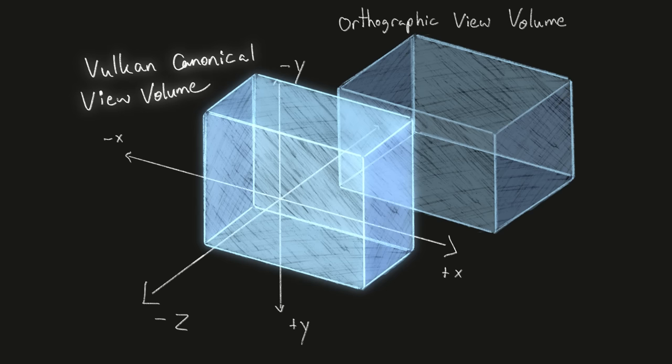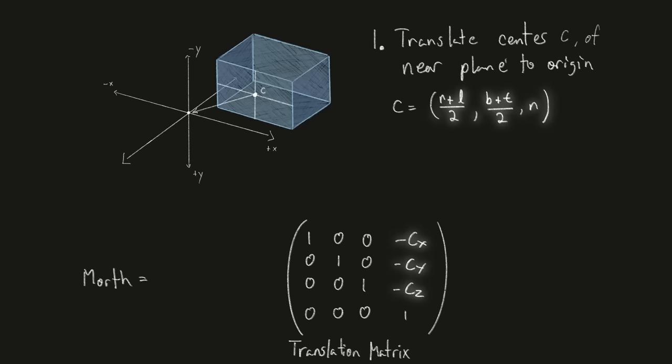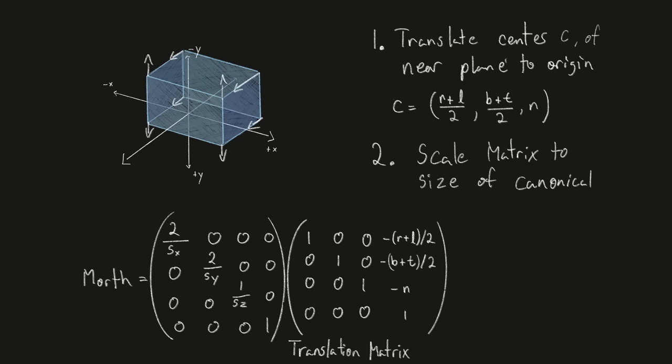We can combine two basic transformations. First, translate the box so that the center of the near plane is at the origin. Then, follow that with a scale transformation so the boxes have the same dimensions. So the numerator will be the canonical view volume's dimensions, and the denominator will be the dimensions of the orthographic view volume. If we multiply the matrices and simplify, we get the orthographic projection matrix.